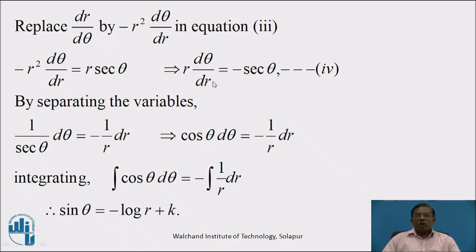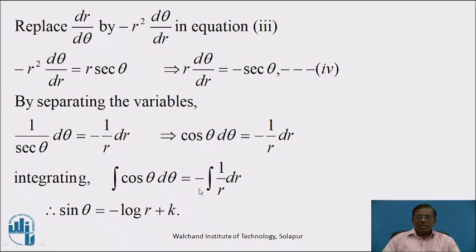This is the ordinary differential equation of the orthogonal trajectory. Now we have to solve equation 4 using the method of separating the variables. We can write equation 4 as: (1/sec θ) dθ = -(1/r) dr, which is cos θ dθ = -(1/r) dr. This is the variable separable form. Integrating both sides: ∫cos θ dθ = -∫(1/r) dr. Therefore, sin θ = -log r + k, where k is a constant of integration. This is the family of polar curves which is orthogonal to the given family of polar curves.